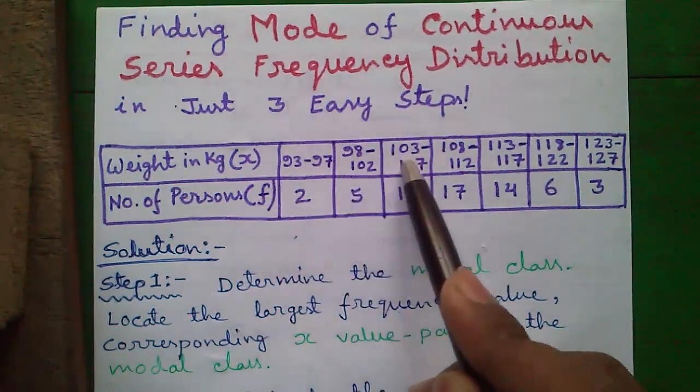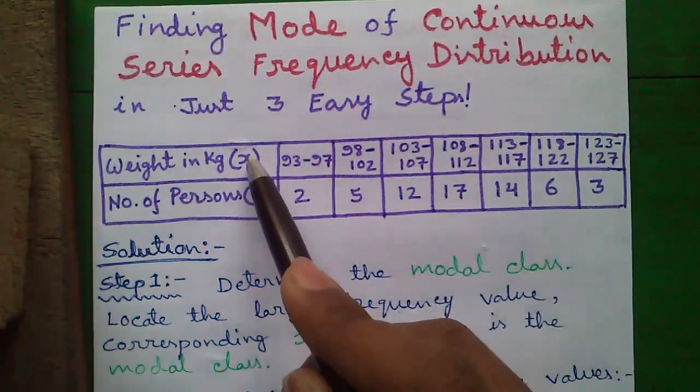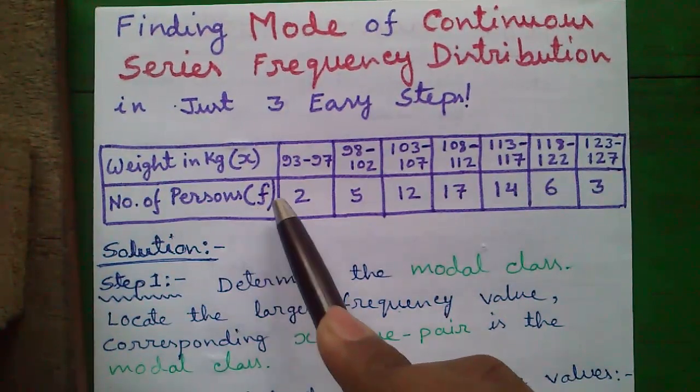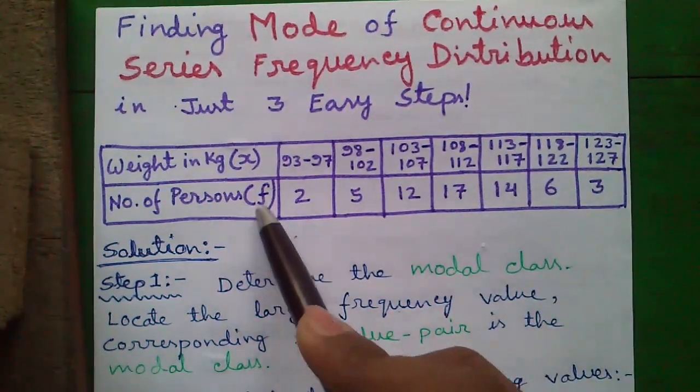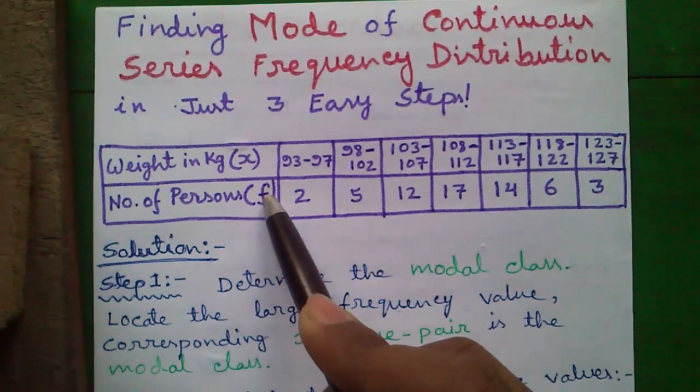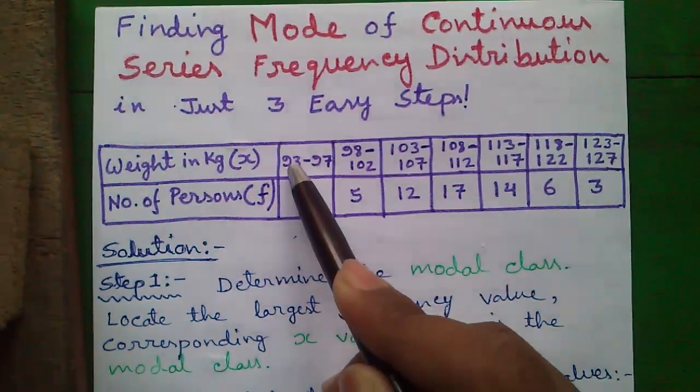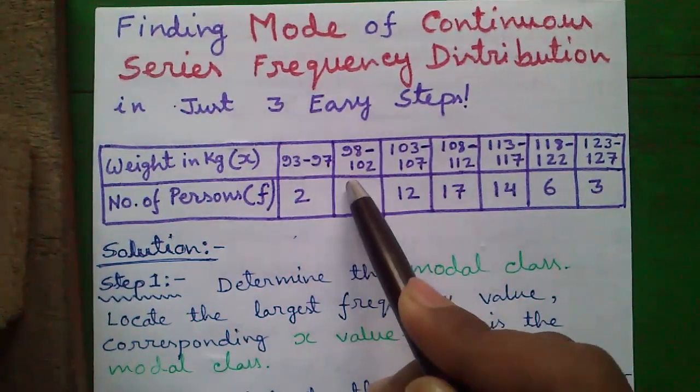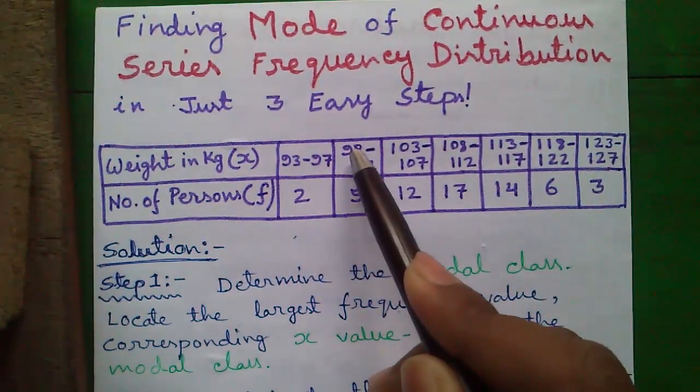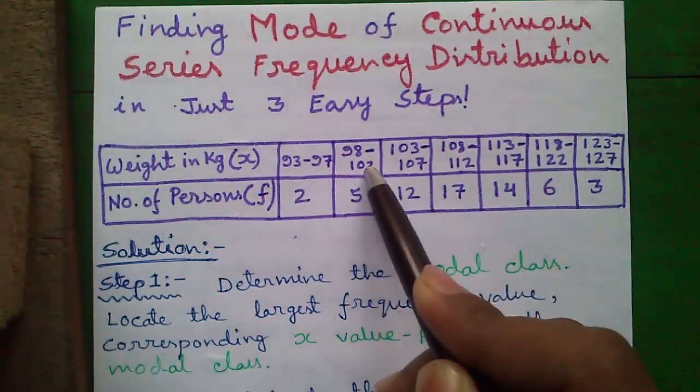Here, weights of some persons are given, denoted by x, and the number of persons having the same weight is given below, denoted by f, also called frequency. That means 2 persons have weight between 93 to 97 kg, 5 persons have weight between 98 to 102 kg, and so on.